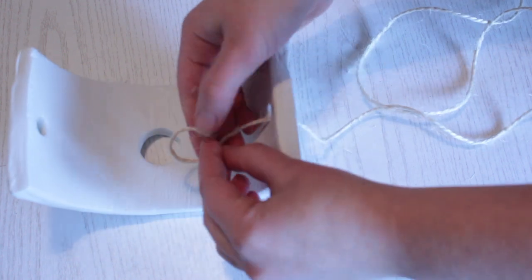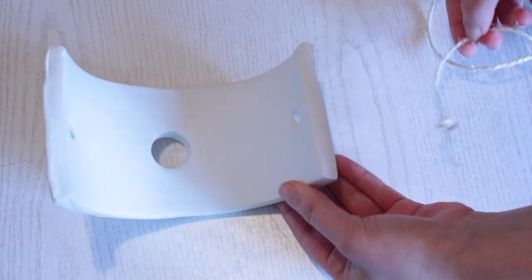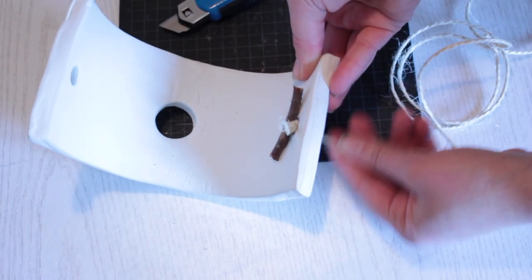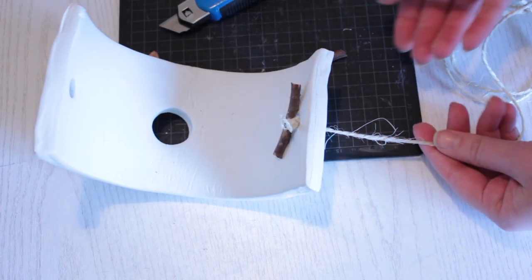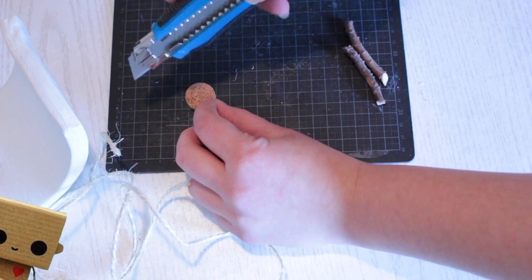Now the rope I'm going to use isn't thick enough to stay in the hole I created. So I need something like a piece of cork or a twig to stop the rope from sliding through. So I cut a piece of cork. Please be careful.